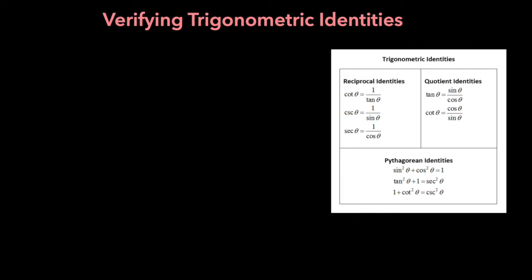Let's jump right into the first problem. We need to prove that cosine x over 1 minus sine x minus cosine x over 1 plus sine x is equal to 2 tangent x.